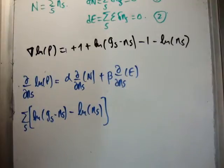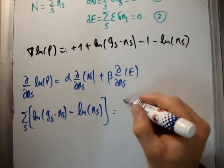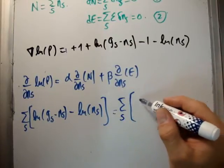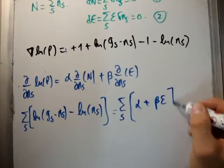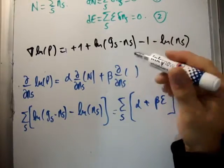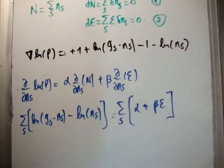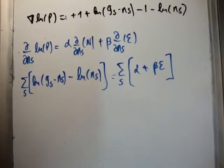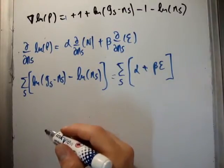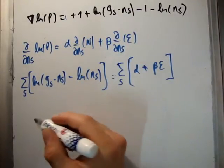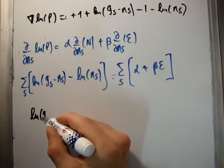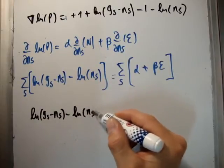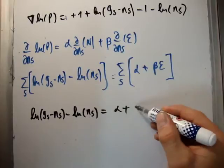Putting it all together, the sum over s of the natural logarithm of g sub s minus n sub s minus the logarithm of n sub s — the plus one and minus one cancel — equals our constraint functions, which is the sum over s of alpha plus beta times epsilon. If we bring everything over, it equals zero, and the only way this equation can be satisfied is if the logarithm of g sub s minus n sub s minus the logarithm of n sub s equals alpha plus beta epsilon.